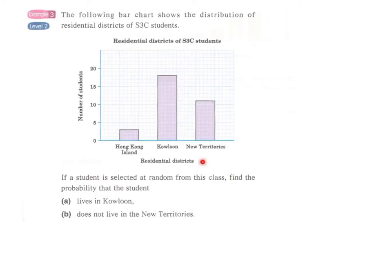Example 3. We have a bar chart here showing the number of students living in Hong Kong Island, Kowloon Peninsula, and the New Territories.